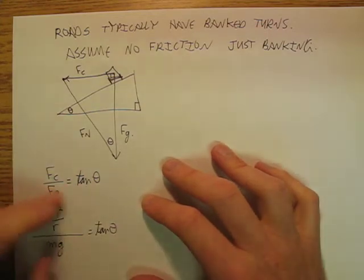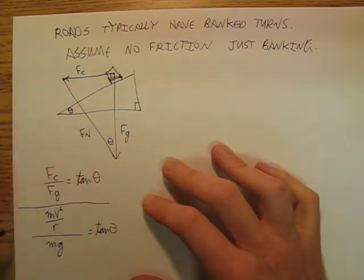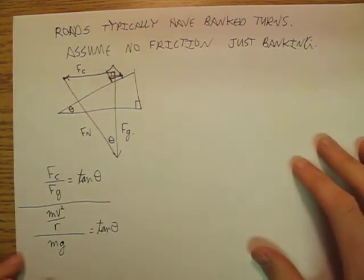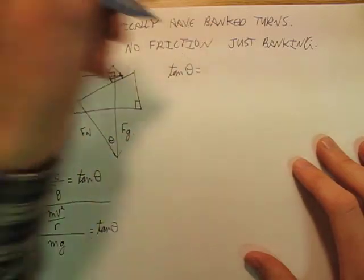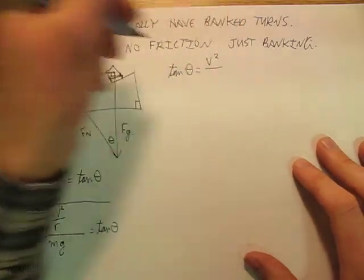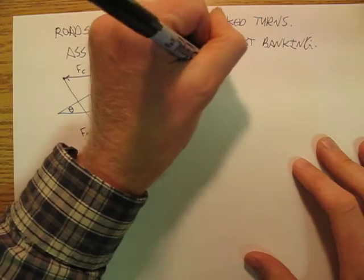So we can put these two together, and we can come up with tan theta is equal to v squared over rg.